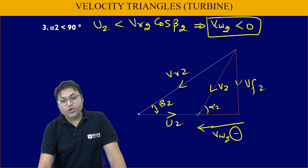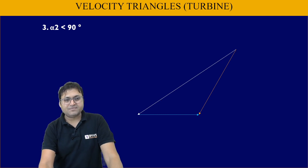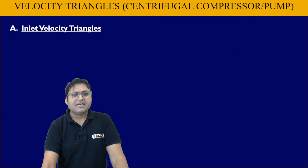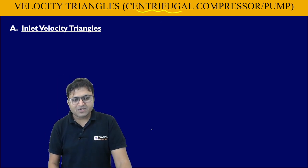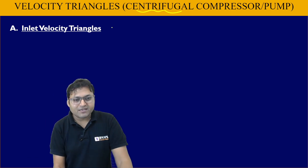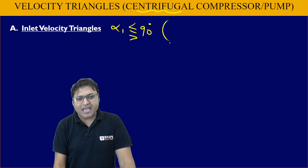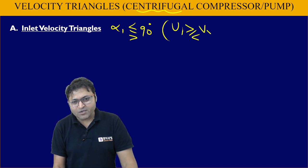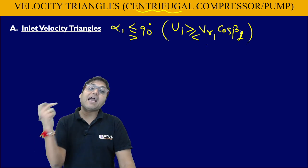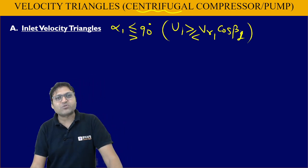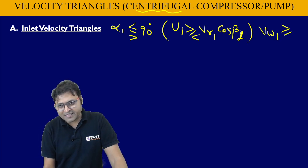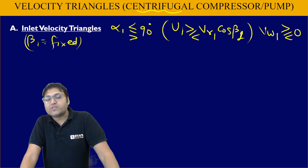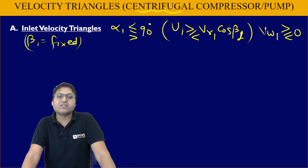Now let us draw the velocity triangles for the pump or compressor. The inlet velocity triangle for the centrifugal compressor or centrifugal pump depends on α1. α1 can be less than, equal to, or greater than 90 degrees. Correspondingly, U1 is greater than, equal to, or less than Vr1·cos β1, and Vw1 is greater than, less than, or equal to zero. β1 is fixed. The exit velocity triangle of the turbine and the inlet velocity triangle for the compressor or pump are similar.